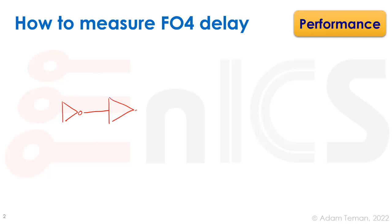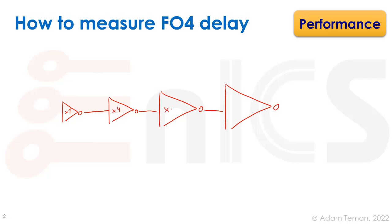I want to use this measurement simulation to show good simulation practice. We have four inverter gates, each exponentially bigger: times 1, times 4, times 16, and times 64. We bring our input step in here and measure the delay throughout. The question was: what is the job of this first inverter?